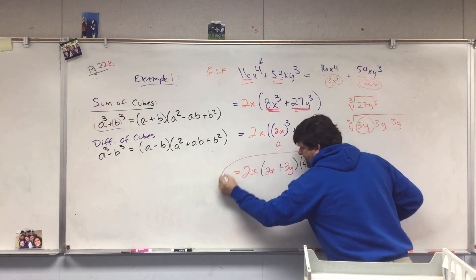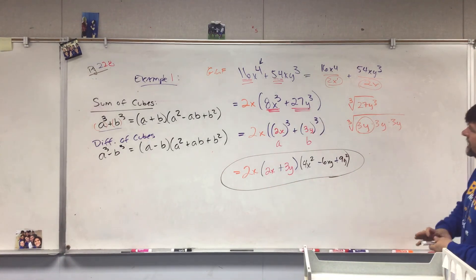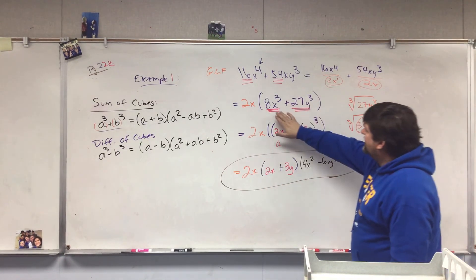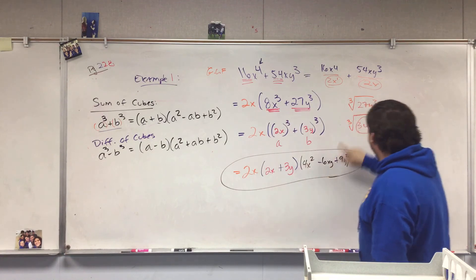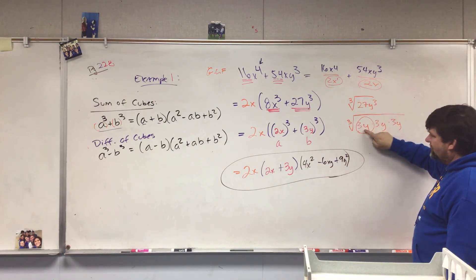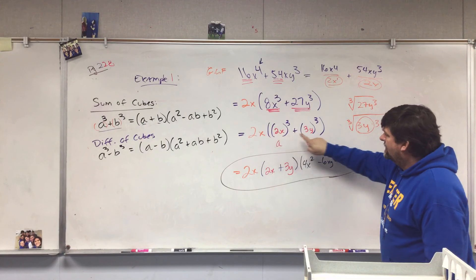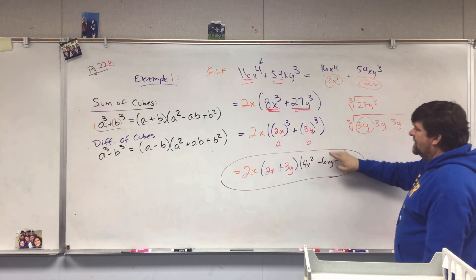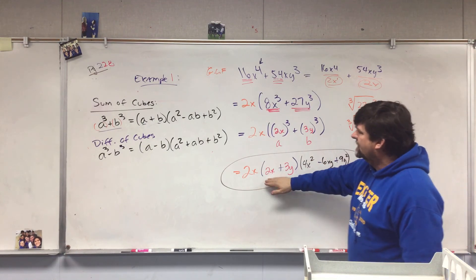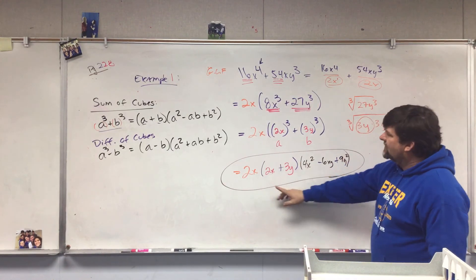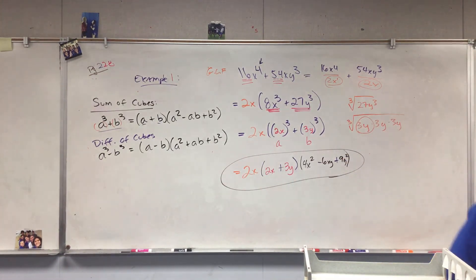The key step is getting it into perfect cube forms, finding the cube root. Whatever that cube root is is what your a and b become. And then once you find your a and b, you're just plugging it in. And don't forget the greatest common factor travels outside. Good luck guys.